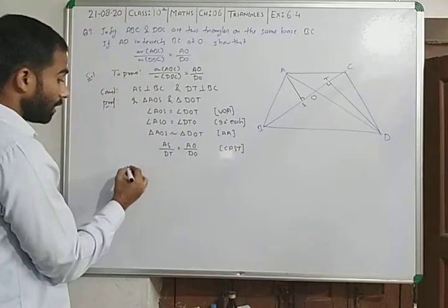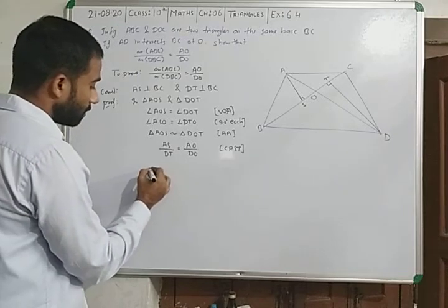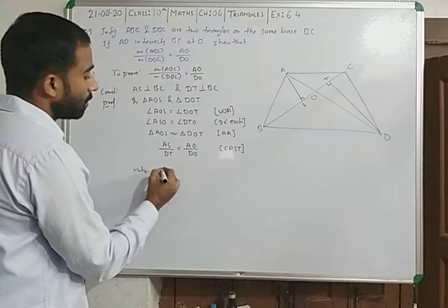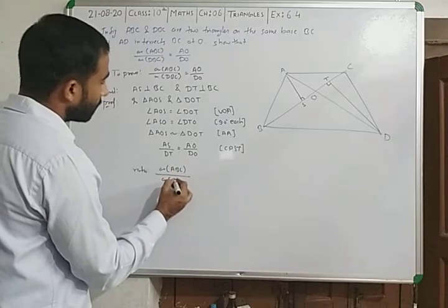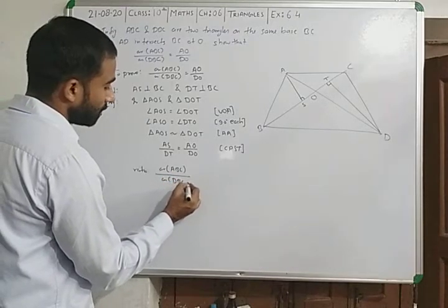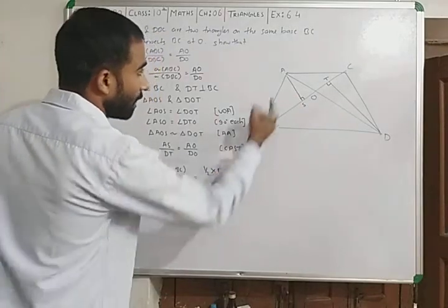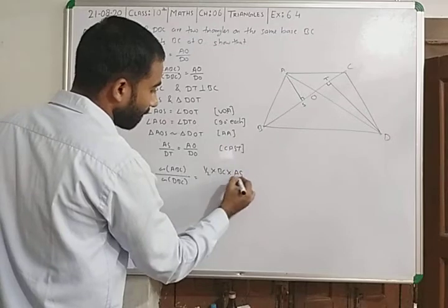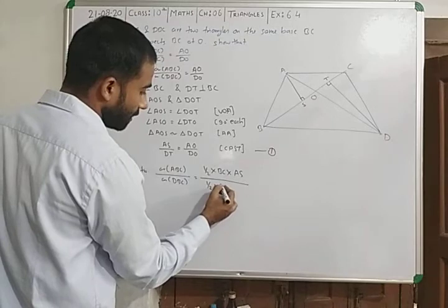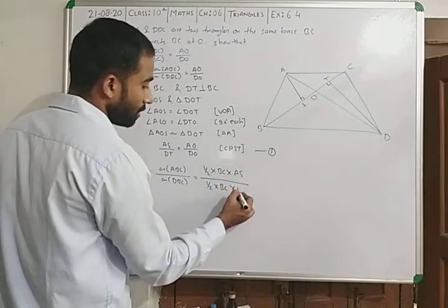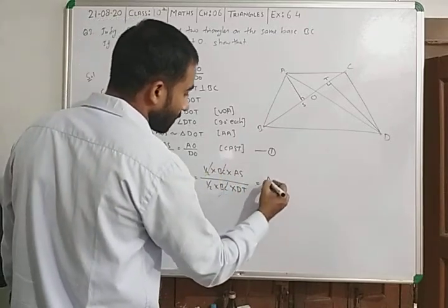Again we will consider the triangles. We have to write here now the ratio of the area of two triangles: area of triangle ABC upon area of triangle DBC. As you know, area is half into base, base is BC into height, height is AS, upon half into base BC, height DT.